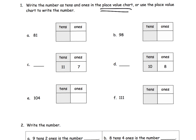So how are we going to model 81? We want students to recognize that 81 is 8 tens and 1 one. 98 — we want them to recognize that 98 is 9 tens and 8 ones.